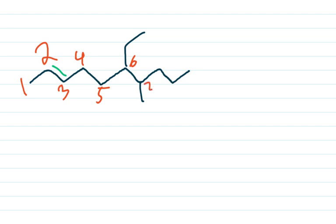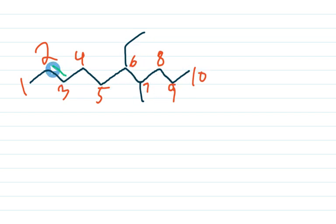Numbering this way gives us one, two, three, four, five, six, seven, eight, nine, ten — a 10-carbon chain. This numbering gives us the longest carbon chain with the most substituents. If you took a detour at six it wouldn't be the longest chain. Starting from this side puts the double bond at carbon two, whereas starting from the other side would put it at carbon eight, so this direction is correct.